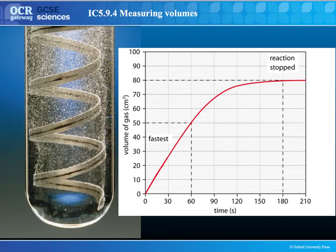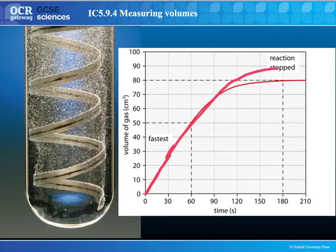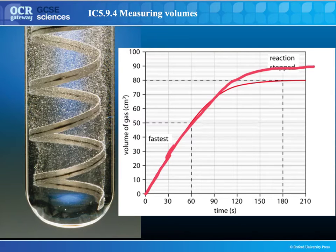This graph shows a classic rate of reaction — this is between magnesium and hydrochloric acid producing hydrogen gas. You can see the shape of the reaction: it is at its fastest at the start, then slows down and stops. The steepest part of the graph is the fastest part, and when it has slowed down to a stop, that's because one of the reactants has run out. Whichever reactant has run out is said to be the limiting reactant, and the one left over is described as being in excess.